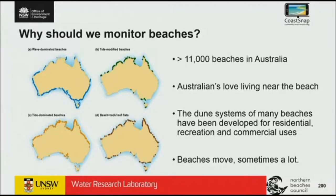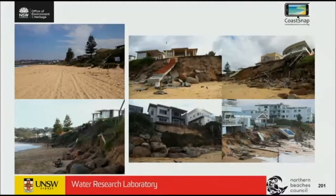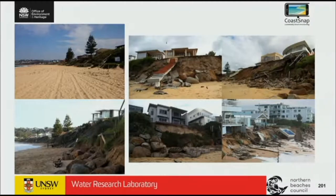I thought I'd probably need to cover with this audience why we're interested in monitoring beaches. I'm not talking about the critters in the beach, not talking about shorebirds — just the beach itself. We've got over 11,000 beaches in Australia, and Australians love living near the beach. Because of that, the dune systems of many beaches have been developed for residential, recreation and commercial uses. And a lot of people don't realise that beaches move — all the time, and sometimes a lot. These are the types of problems we come across when we have a big storm and the beach washes away. This is basically immediately before and after a storm on the east coast of Australia, New South Wales, in 2016 — the famous Terrigal-Wamberal Beach, and everyone would have seen the pool fall in the sea at Narrabeen Beach.